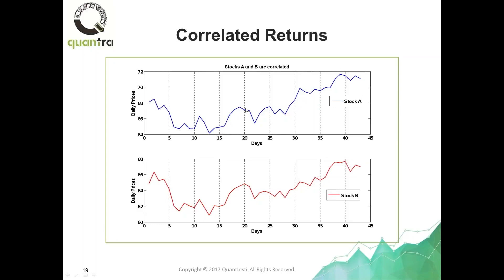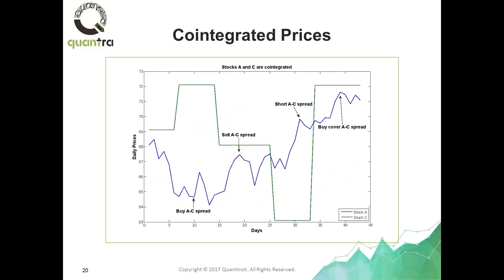The two concepts are different. To illustrate, consider two hypothetical price time series. Stock A is on top with a blue line and Stock B is at the bottom with a red line — these are daily prices. I've constructed these two stocks so that they are correlated: when Stock A goes up, Stock B goes up; when Stock A goes down, Stock B goes down. Their returns are very correlated.